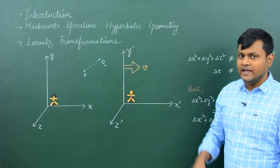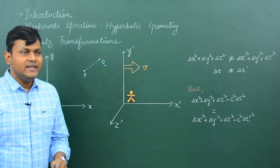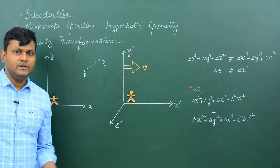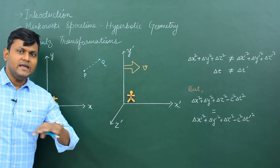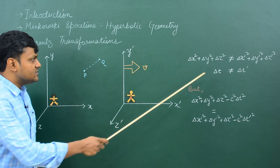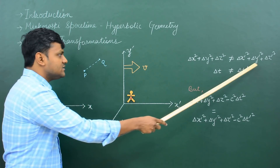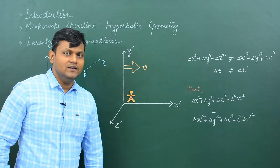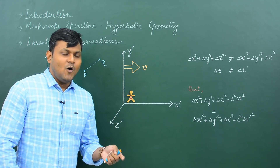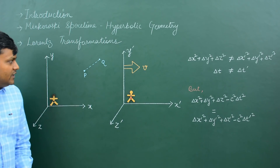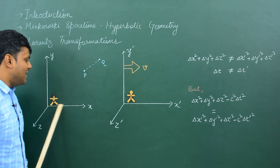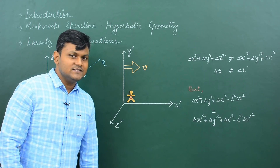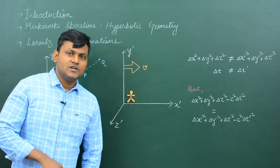Now if both of them try to measure the distance between any two events P and Q in space and time and measure the spatial distance between two points, then the distance that Batman measures and the distance that Superman measures are going to be different. This is known as length contraction or space contraction. Similarly, if two events happen at different time intervals, the time periods Batman and Superman measure are not going to be the same. This is known as time dilation.